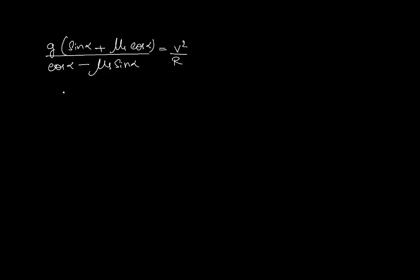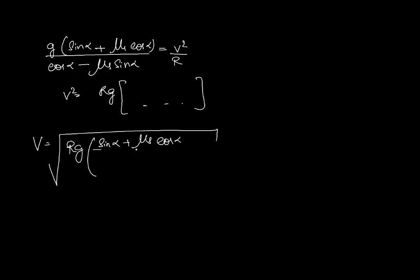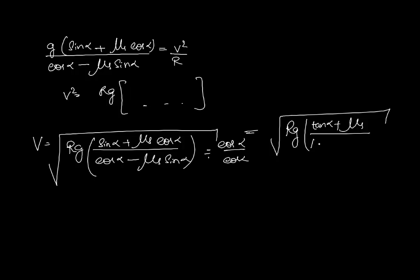Okay. Now we get an expression for v square. v square over r equals rg into this huge thing. And so v now becomes square root of rg into sine alpha plus μs cos alpha divided by cos alpha minus μs sine alpha. And to make it a little easier to remember we will divide and multiply by cos alpha. And so our final expression which is a little bit easier to remember becomes: I have a sin by cos that gives me tan alpha plus μs divided by 1 minus μs tan alpha.